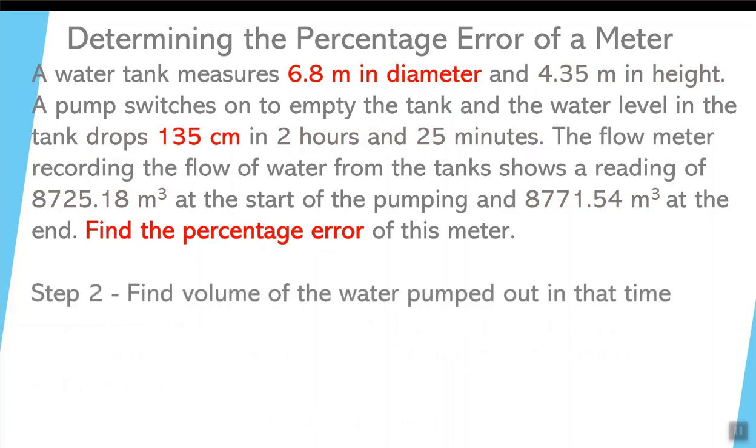Let's now take a look at the second step. How much water actually left the tank? Now, we know the diameter is 6.8 meters, and we know that the height of the water drop was 135 centimeters or 1.35 meters. Now, I'm not going to go through how to find the volume of the cylinder that was done in an earlier video.